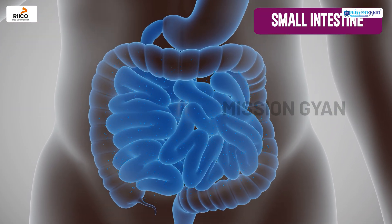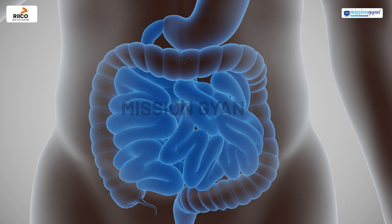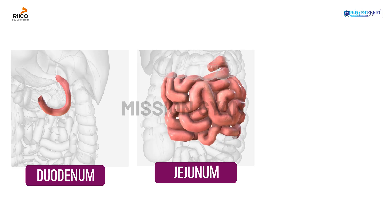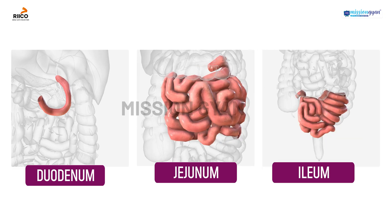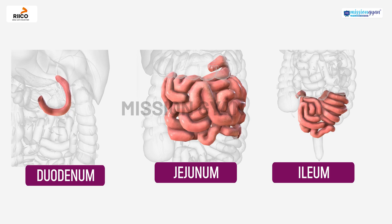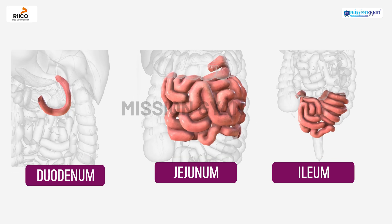The small intestine is the longest part of the alimentary canal where complete digestion occurs. It is divided into three parts: the duodenum, jejunum, and ileum. Most digestion occurs in the duodenum while the jejunum and ileum are responsible for absorbing nutrients.